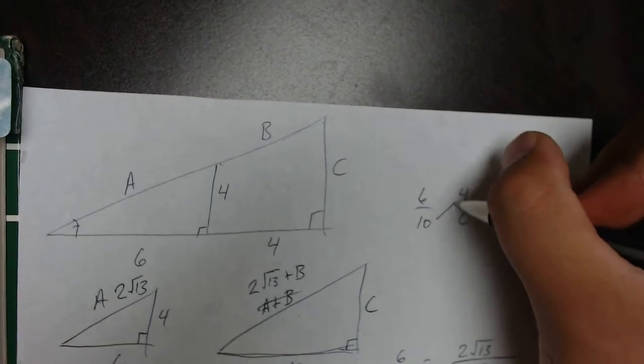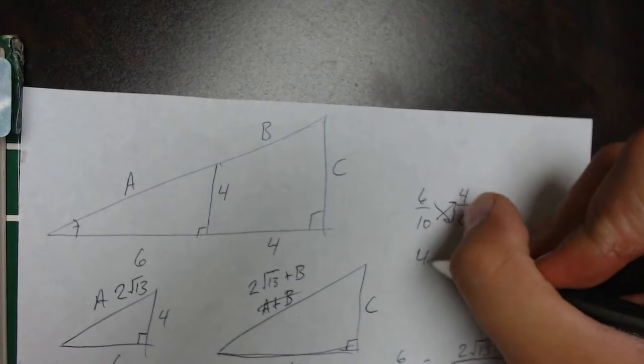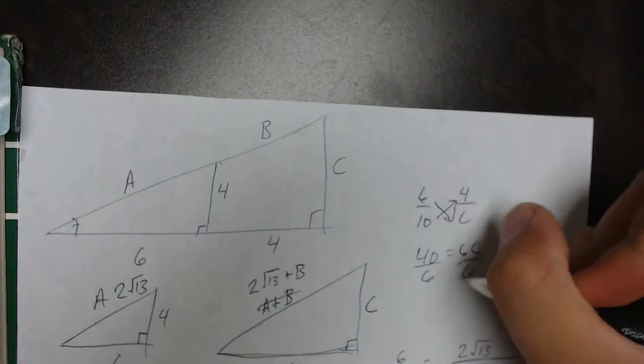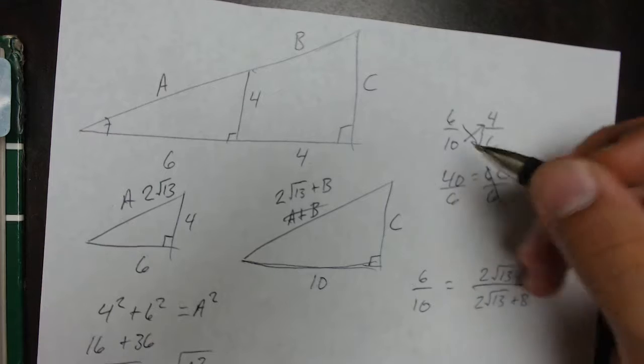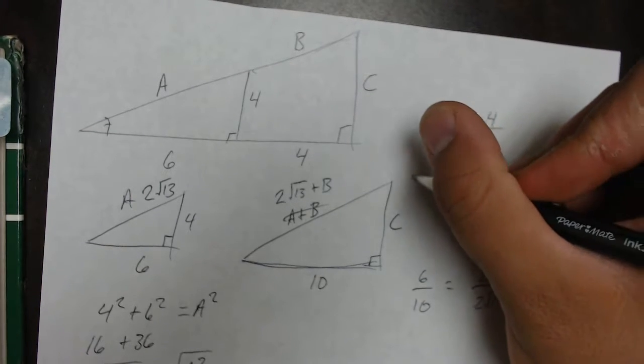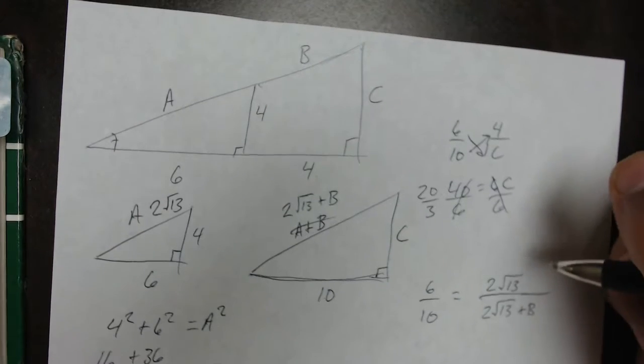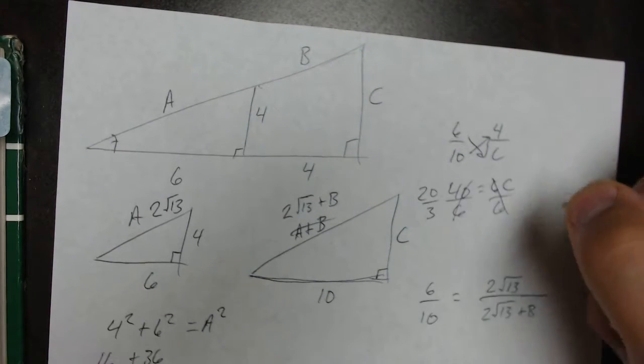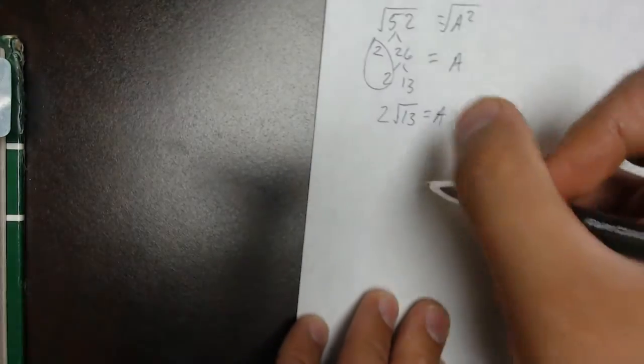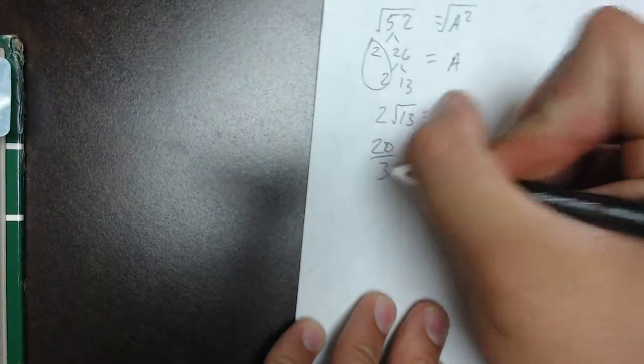We'll start with the easy one first. Cross multiply, then we get 40 equals 6C. Divide each side by 6. That will become 20 over 3 once we reduce it. So we could say that C is equal to 20 over 3.